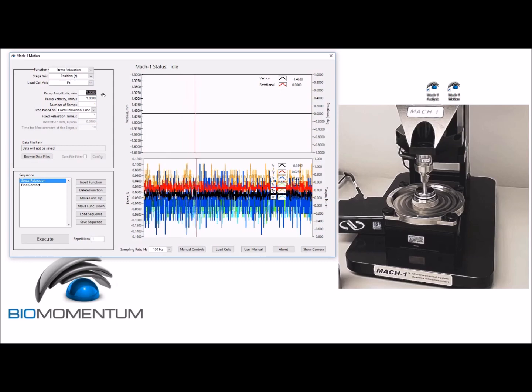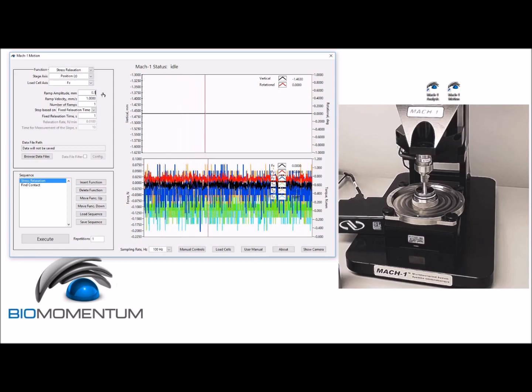And a ramp velocity of 0.4 percent of the sample thickness per second, which corresponds to 0.005852 millimeter per second.